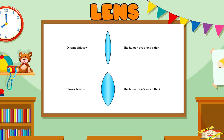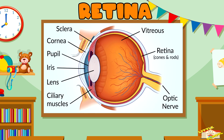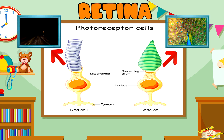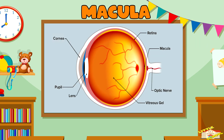Retina: The retina is the light-sensitive layer at the back of the eye. It contains photoreceptor cells — rods and cones — that convert light into electrical signals. Rods help with low-light vision, and cones are responsible for color vision. Macula: The macula is a small, specialized area in the center of the retina.